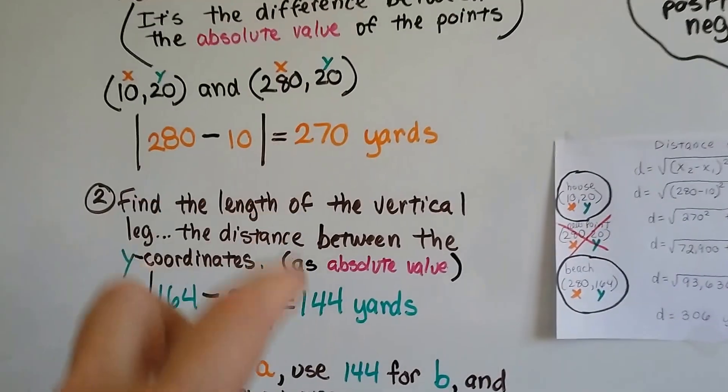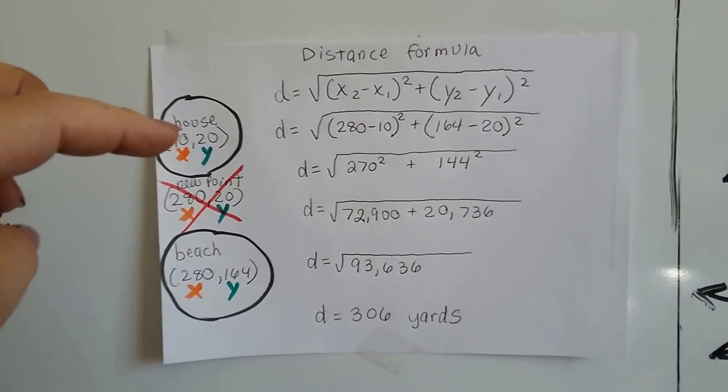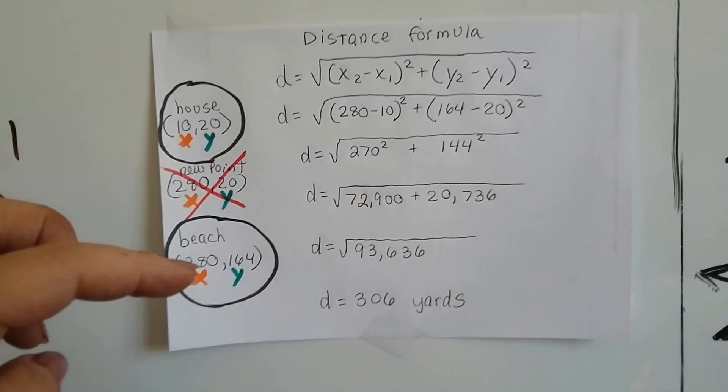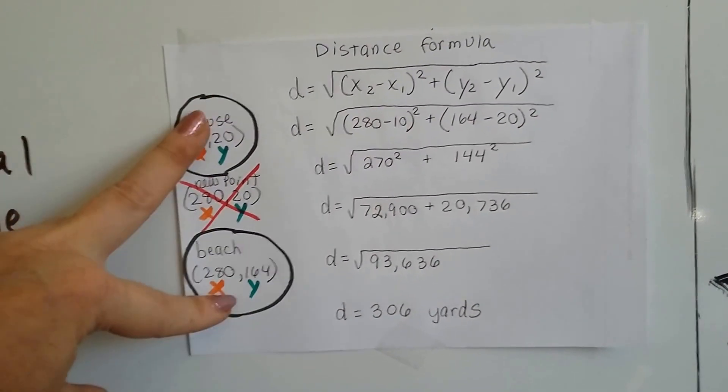So remember we had 270 and 144? So here's what we did. Here's the house's coordinates, and here's the beach's coordinates. And we didn't use the new point coordinates. We just used the house and the beach.